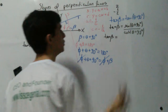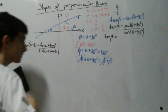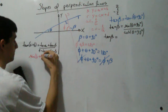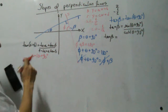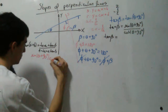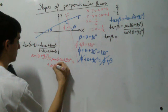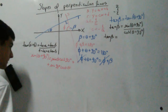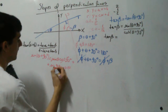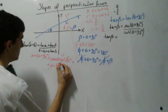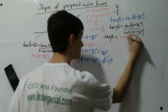The tangent of beta equals sine of (theta + 90) over cosine of (theta + 90). For the numerator: sine of (theta + 90) equals sine(theta)·cos(90) + sine(90)·cos(theta). Since cosine of 90 is 0 and sine of 90 is 1, this simplifies to cosine of theta.